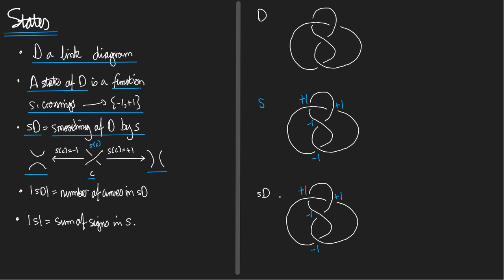I'll give you some clues. Let me draw an up arrow indicating which way is up according to the standard diagrams of the smoothing. For this crossing, up is this way; for this crossing, up is this way; for this one it's this way; and for this one here, it's this way. Now have a go at the smoothing — pause it and try.